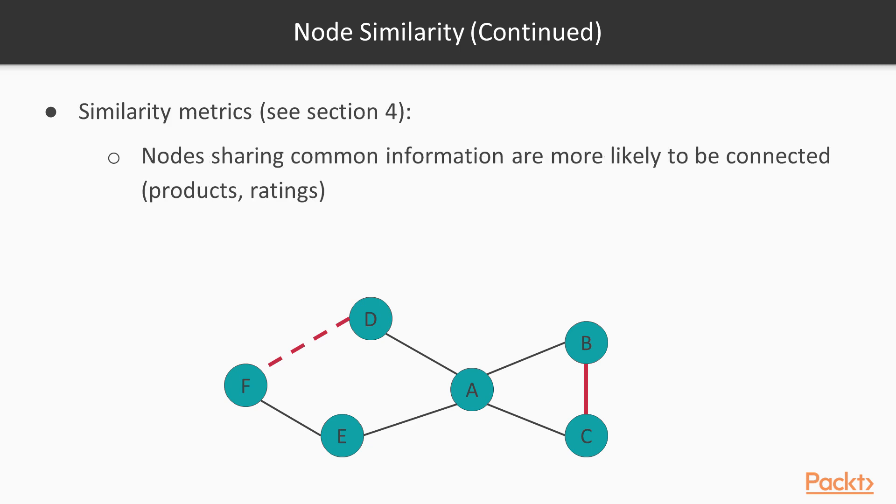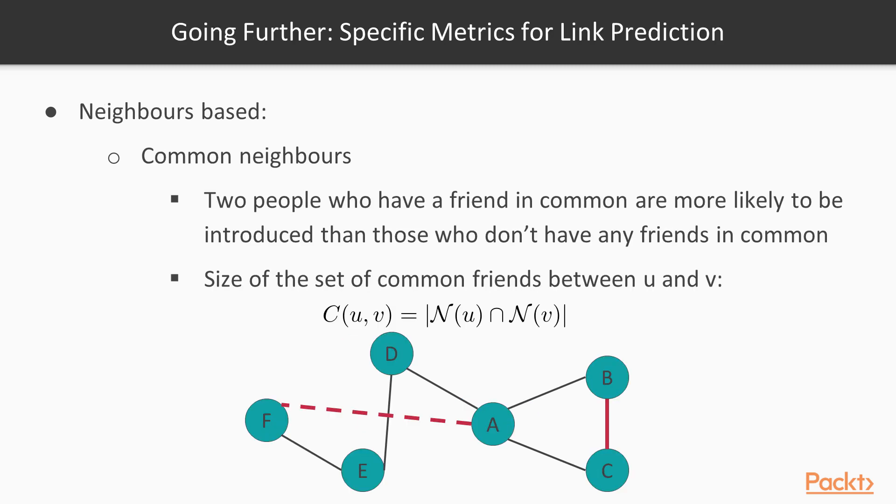Of course, the similarity metrics we discussed at the end of section 4 can also be good indicators of whether nodes can be connected. There are other techniques more dedicated to the link prediction problem. A lot of them are neighbors-based, meaning they compare the size of the neighbors of two nodes, U and V.